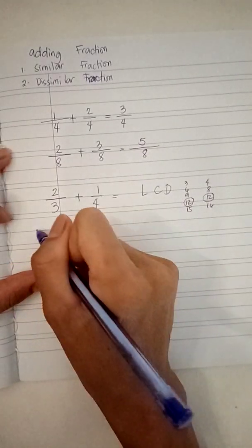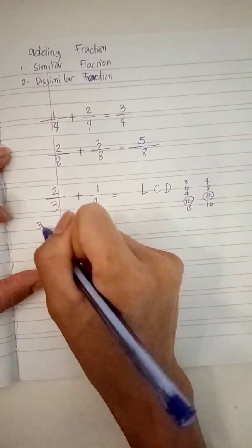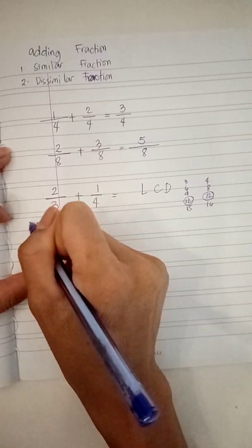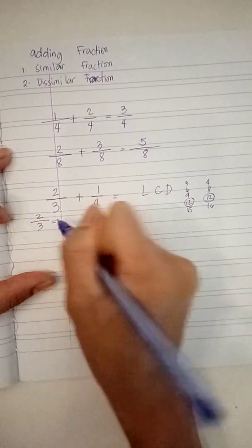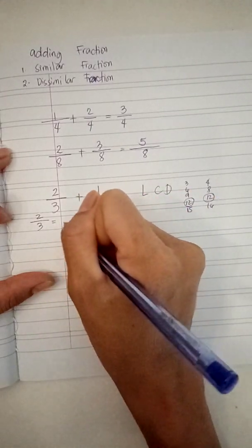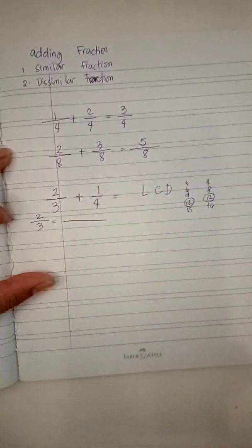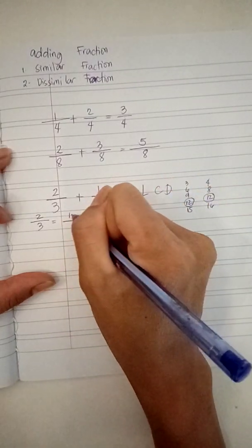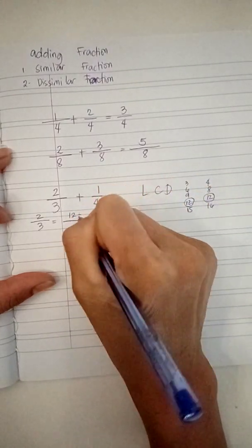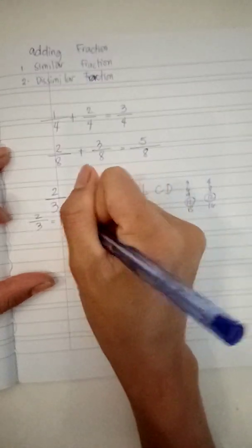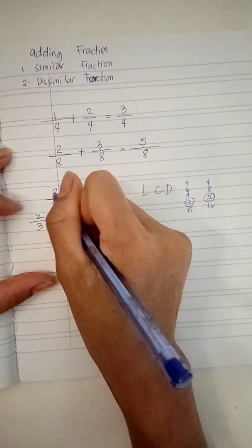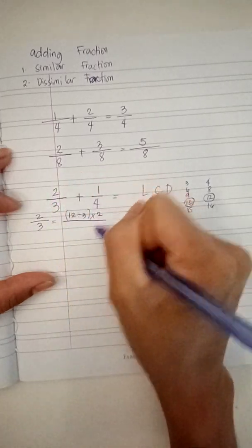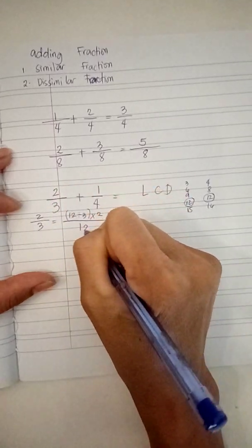Let's calculate the two over three. Three, it will be like twelve divided by three times the numerator, which is two over twelve.